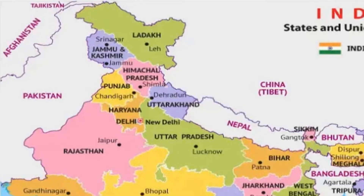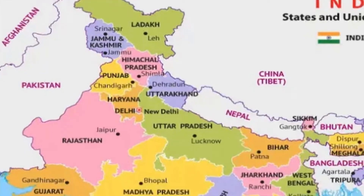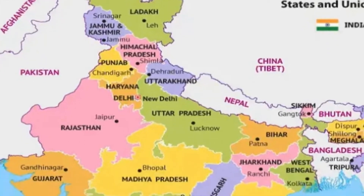Further down, you can see New Delhi, touching Haryana on one side and Uttar Pradesh on the other. UP is the biggest state in terms of population — Uttar Pradesh. And on the left we have the big state called Rajasthan.